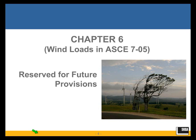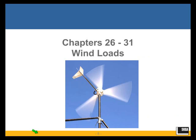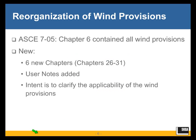Wind provisions used to be in one chapter — Chapter 6 of ASCE 7-05. That chapter, if you look at ASCE 7-10, is empty. Wind provisions have gone to the back of the book, to multiple chapters: 26 through 31. So, six new chapters are devoted to wind design.